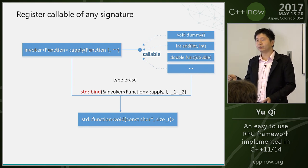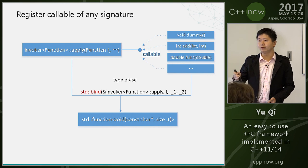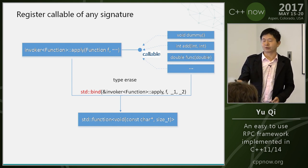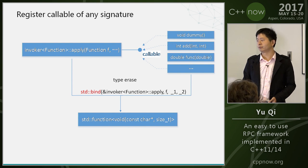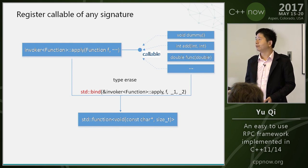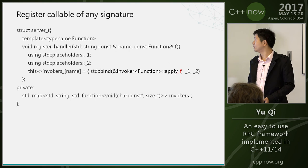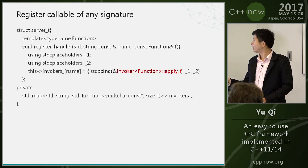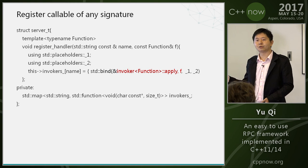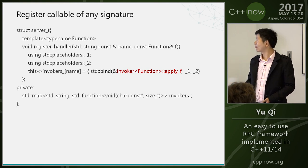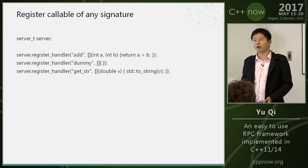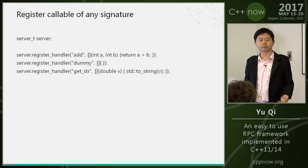Here I hide the real function inside a std::function. Then you can put the std::function into a container. I need a class to hold the type information. Now we can register any callable, and we have solved the first challenge.